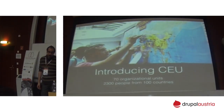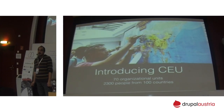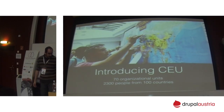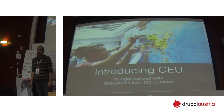CEU is a young, 25-year-old university in Budapest. It offers degrees mostly in social sciences. This is important because it creates a very different situation from when you are building a website for MIT. It has some 70 organizational units and 2,300 people in the community from over 100 countries. The working language is English, which means we don't have to deal with multilingual at all.